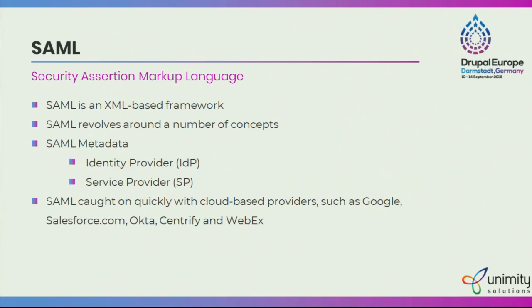In both the IDP and SP, we have some attributes. The major attribute is the entity ID, which specifies the unique application ID — for which application we make the IDP and which we make the SP. Each application will have a unique entity ID. Another parameter is the valid until — the validity and expiration of the SAML metadata. SAML is an open standard, so it can be easily configured with Google, Salesforce, Okta, Centrify, and WebEx. We did SSO integrations with all of these.